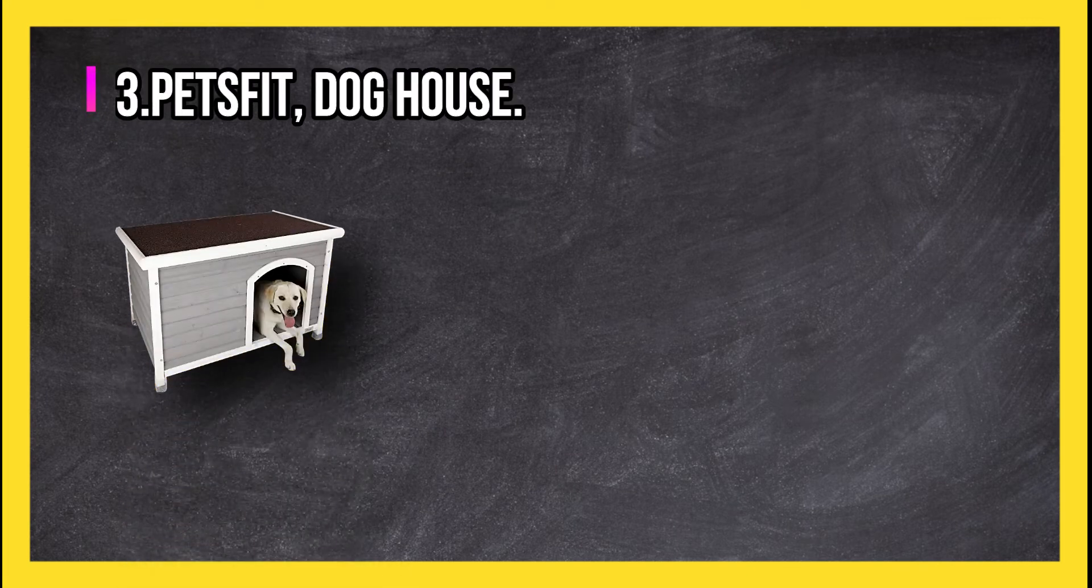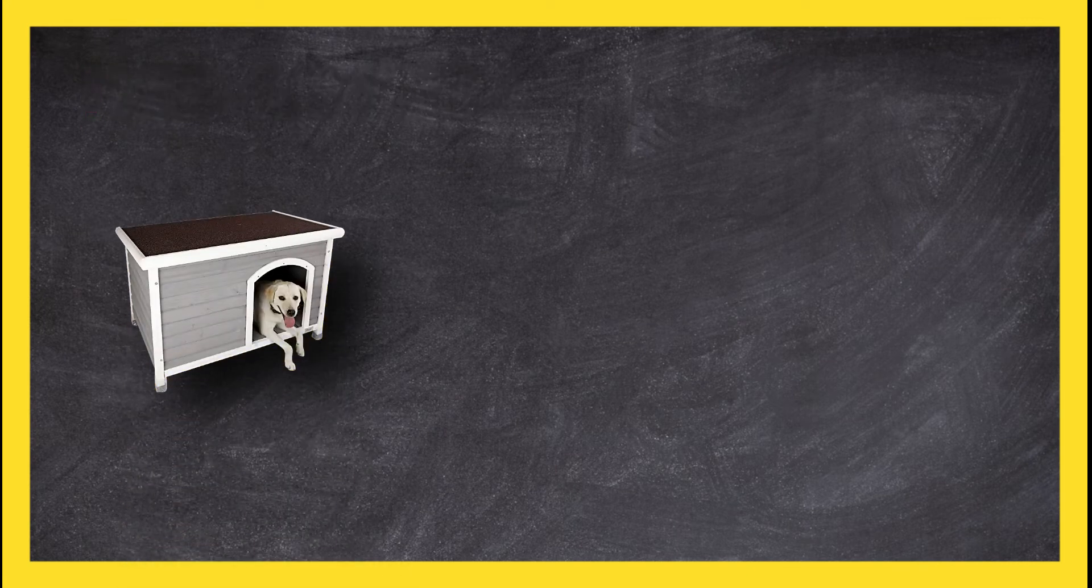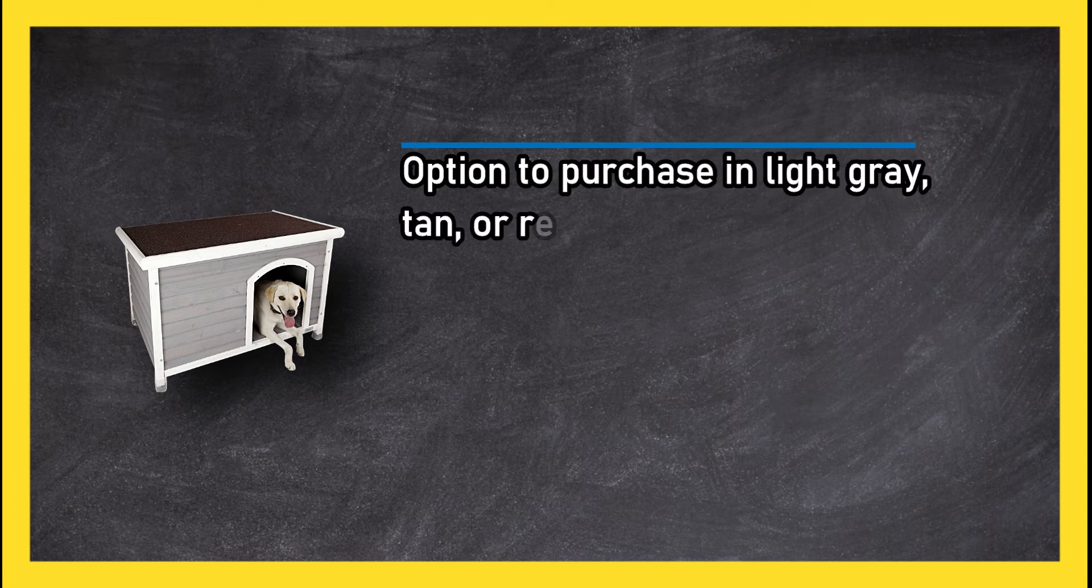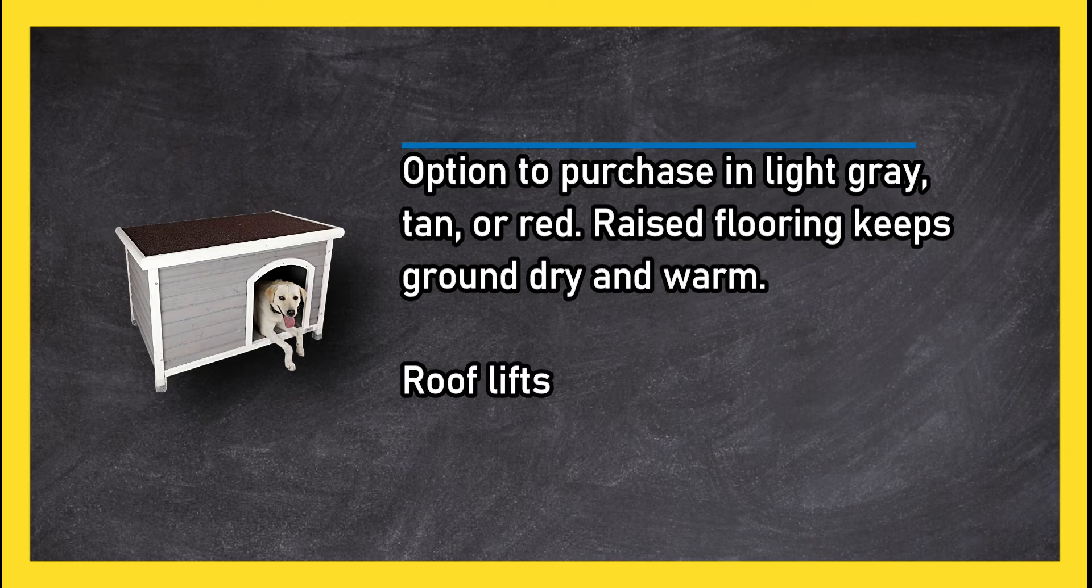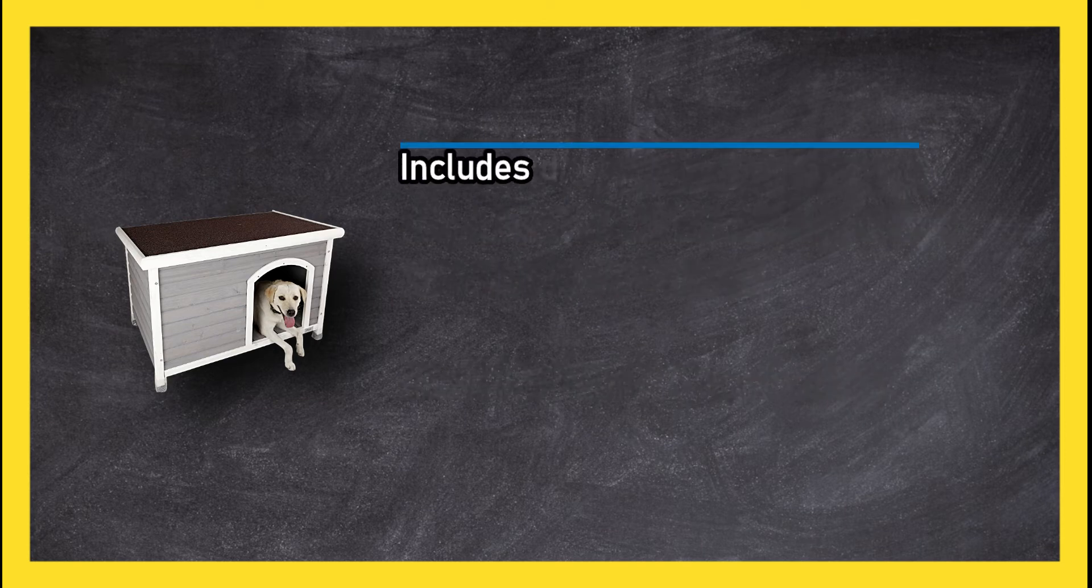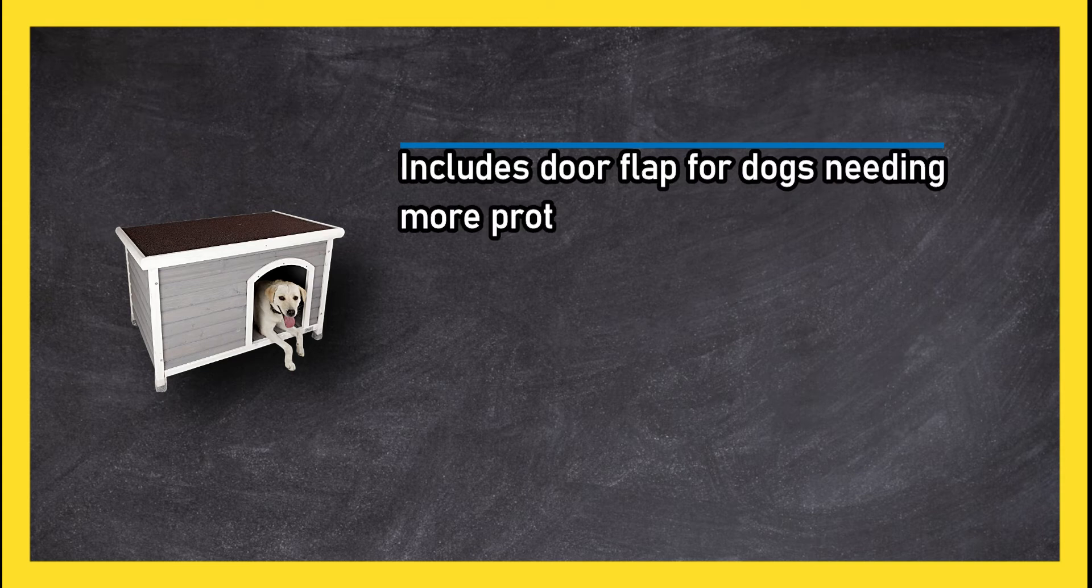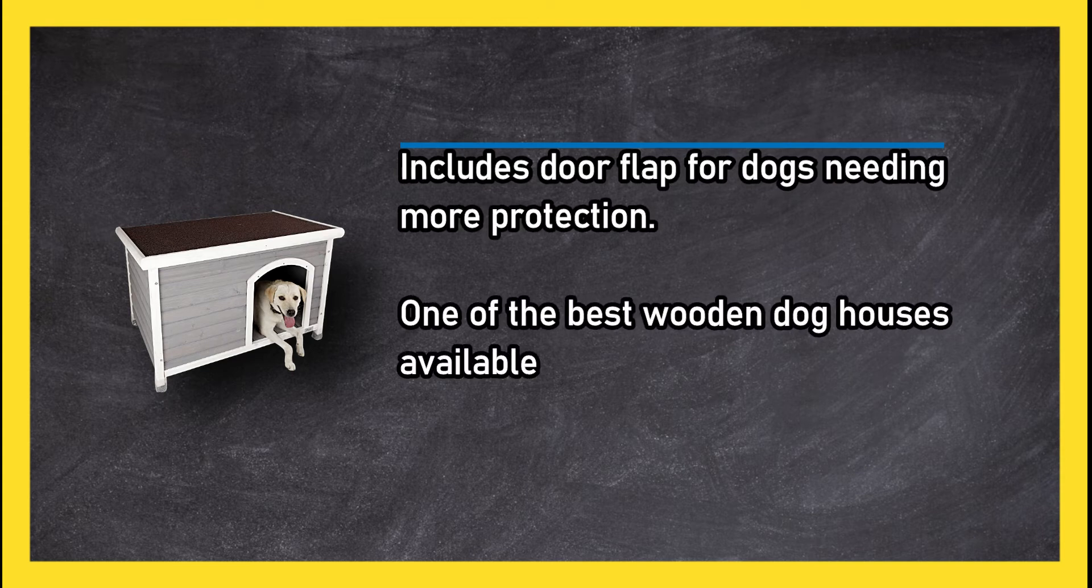Pets Fit Doghouse: option to purchase in light gray, tan, or red. Raised flooring keeps ground dry and warm. Roof lifts for simple cleaning. Includes door flap for dogs needing more protection. One of the best wooden dog houses available for purchase.